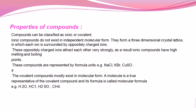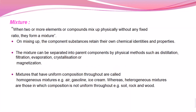Oppositely charged ions attract each other very strongly, so ionic compounds have the highest melting and boiling points. Compounds are represented by formula units: NaCl, KBr, CuSO4. Covalent compounds mostly exist in molecular form, and their formula is called the molecular formula — H2O, HCl, H2SO4, CH4.